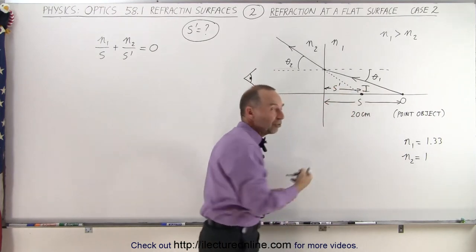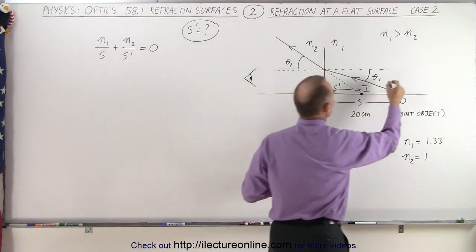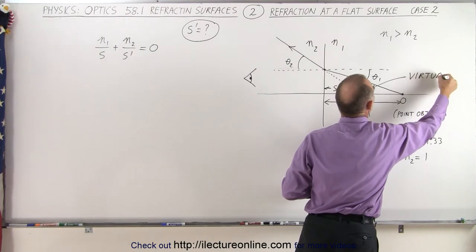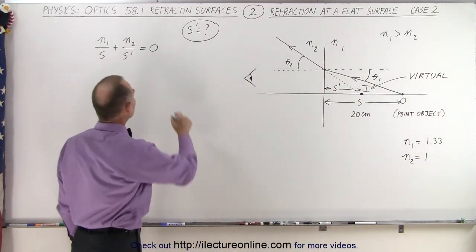Notice since the image is on the same side as the object, it will be a virtual image. So the image here, that's going to be a virtual image, which means we expect a negative image distance. Let's try to work it out and see what we get.